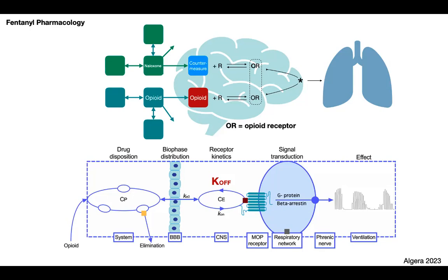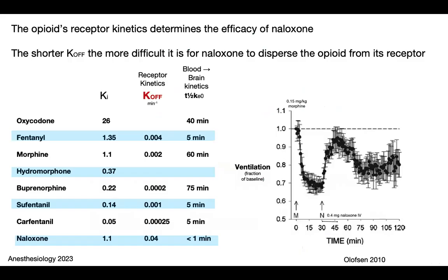The opioid has a constant that defines its attachment to the receptor and a constant — KF — that defines the ability of the opioid to detach from the receptor. The smaller KF, the more difficult it is for the opioid to detach. Do all opioids have the same KF? No, they do not. KF reflects affinity: a very small KF indicates a very high affinity. The opioids you have differ tremendously in the value of KF.